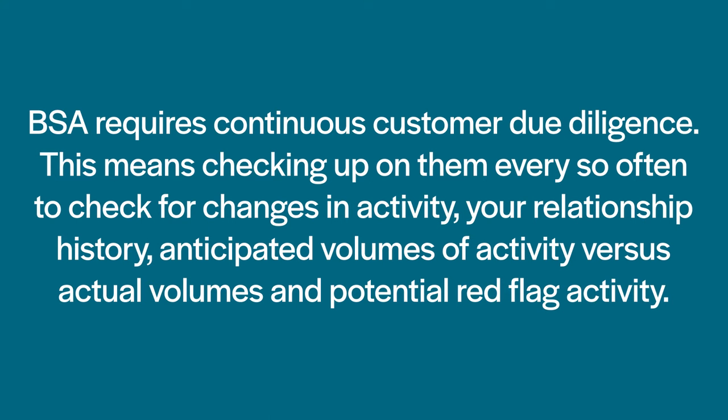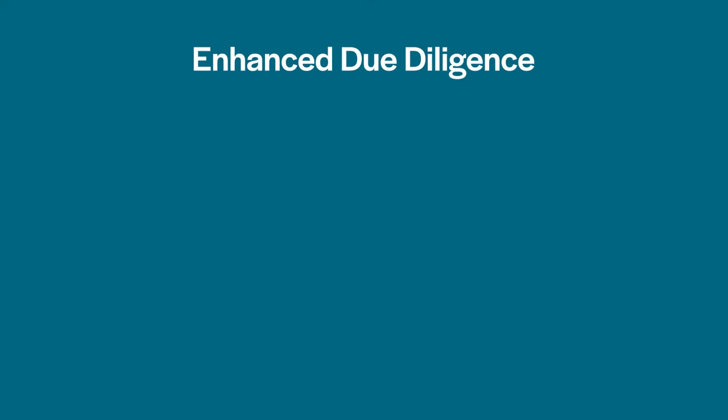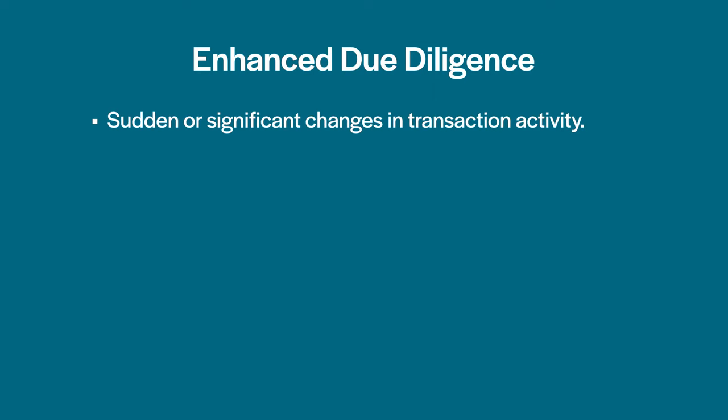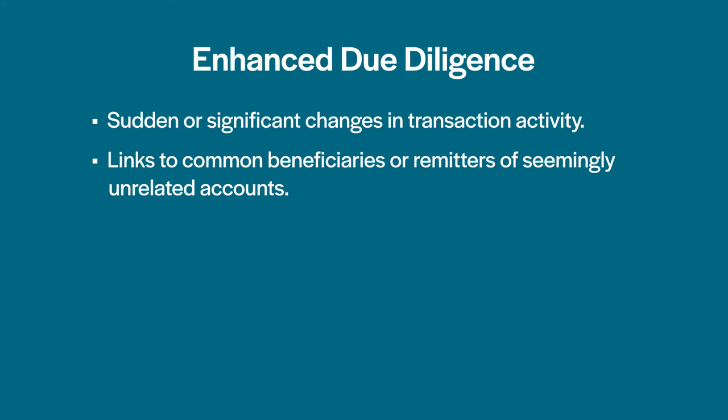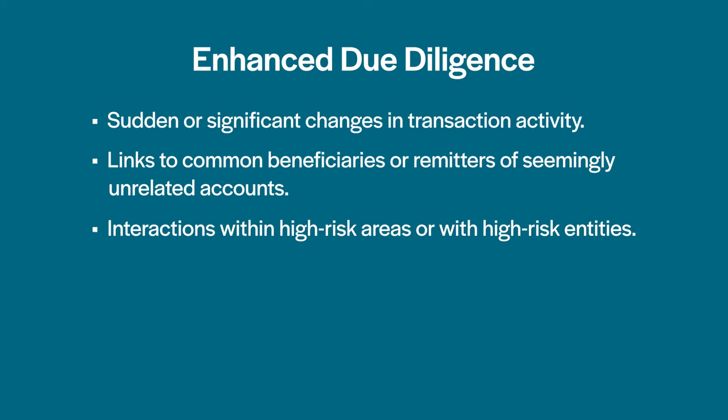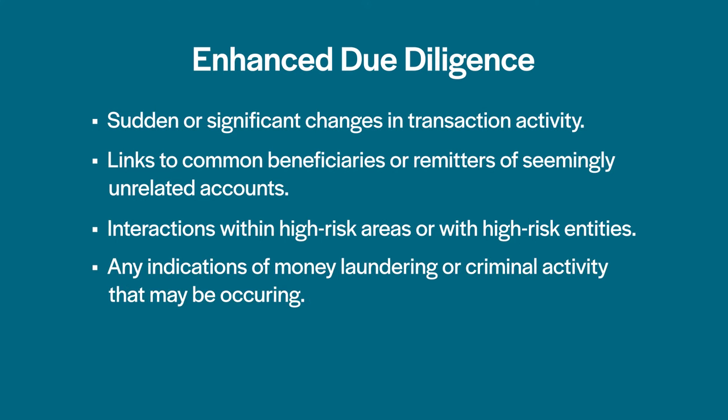Along with the initial step of getting to know your customer, BSA requires continuous customer due diligence. This means checking up on them periodically for changes in activity, your relationship history, anticipated versus actual volumes of activity, and potential red flag activity. Enhanced due diligence checks for sudden or significant changes in transaction activity — for example, did the customer go from bi-weekly deposits to daily — links to common beneficiaries or remitters of seemingly unrelated accounts, interactions with high-risk areas or high-risk entities, and any indications of money laundering or criminal activity.